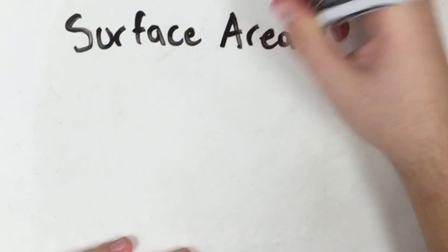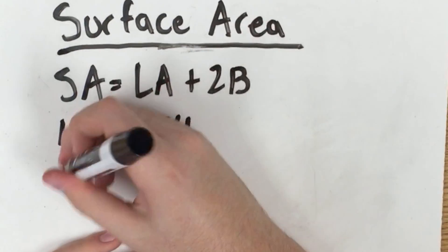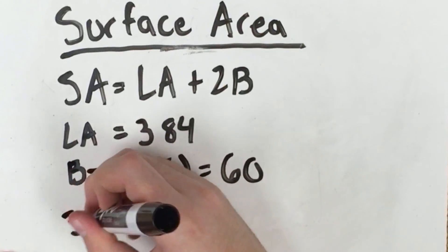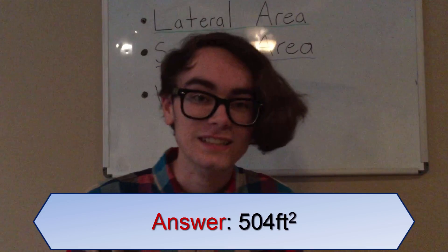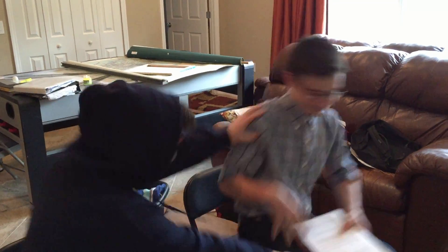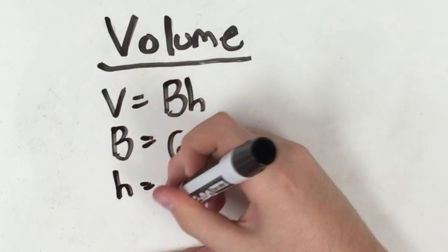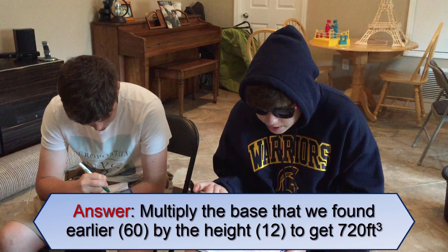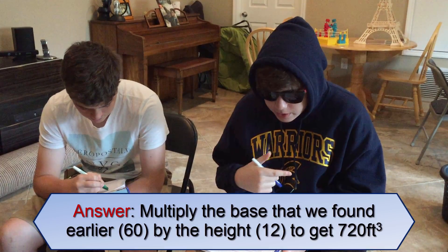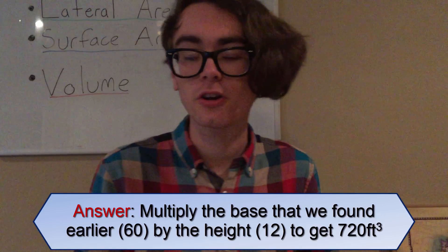Next is the surface area. Start by solving for the area of the base. Use the corresponding area formula for the type of polygon making up the base. Multiply the area by two, and then add it to the lateral area to find the surface area. Is it 504 feet squared? Yes, very good! Finally, solve for the volume. Multiply the previously found area of the base by the height to find the volume. I guess if we multiply the base we found earlier — that was 60 — by the height used for the lateral area, which was 12, I get 720 feet cubed.